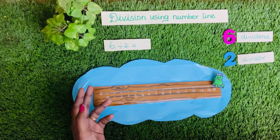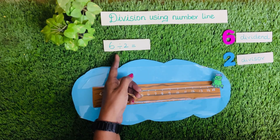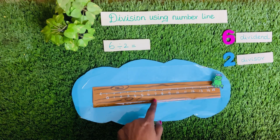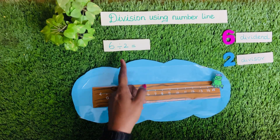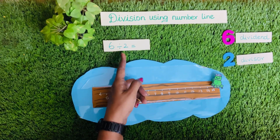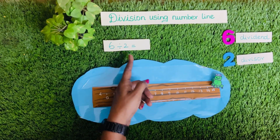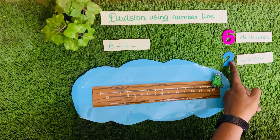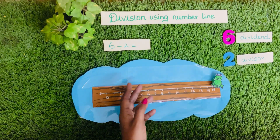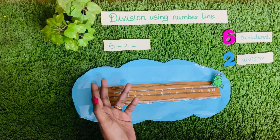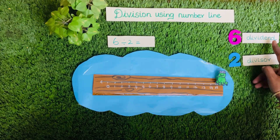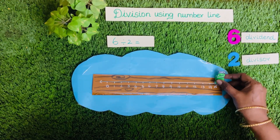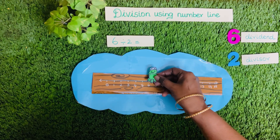Let's divide 6 divided by 2 using a number line. Here 6 is the dividend and 2 is the divisor. We need to find the quotient. As the dividend is 6, we start at the number 6 on the number line.